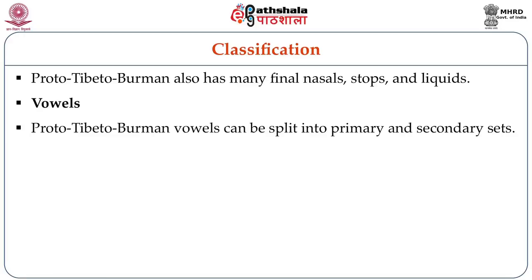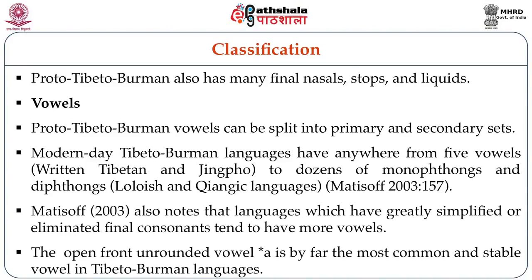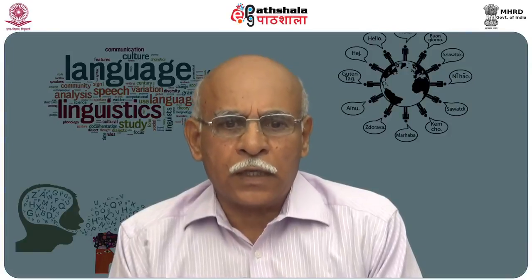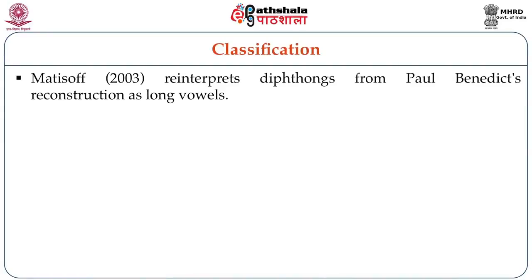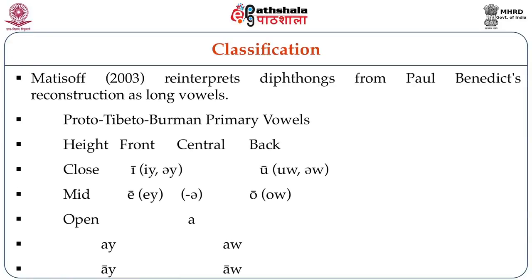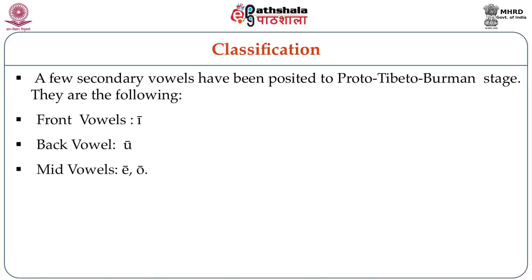Proto-Tibeto-Burman vowels can be split into primary and secondary sets. Modern Tibeto-Burman languages have anywhere from five vowels to dozens of monophthongs and diphthongs. Matisoff notes that languages which have greatly simplified or eliminated final consonants tend to have more vowels. The open front unrounded vowel A is by far the most common and stable vowel in Tibeto-Burman languages. Matisoff reinterprets diphthongs from Paul Benedict's reconstruction as long vowels. A few secondary vowels have been posited for the Proto-Tibeto-Burman stage: front vowel E, back vowel O, and mid vowels A and O.